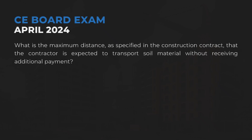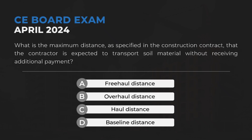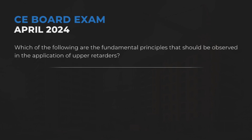What is the maximum distance, as specified in the construction contract, that the contractor is expected to transport soil material without receiving additional payment? Answer: A — Free haul distance.